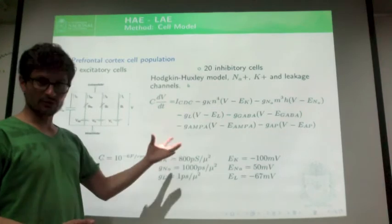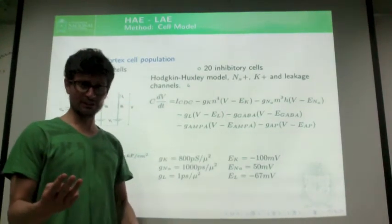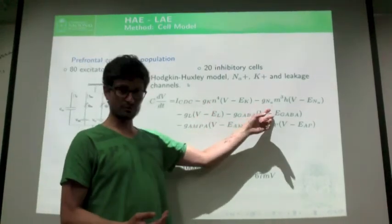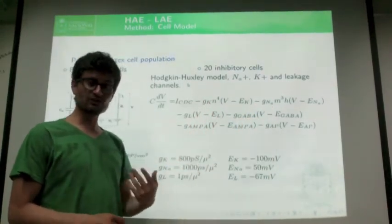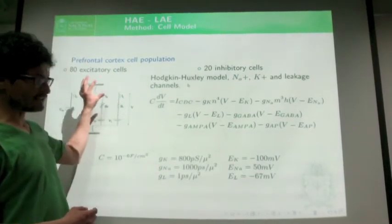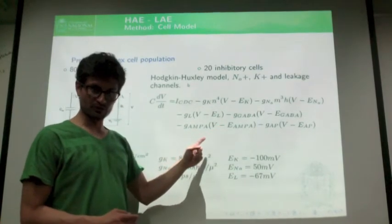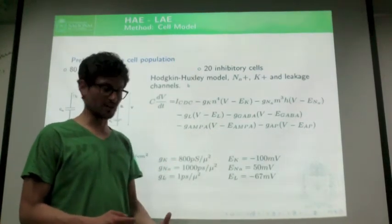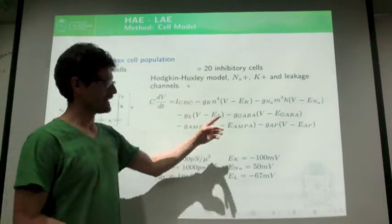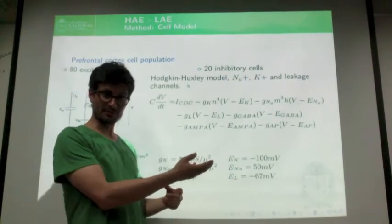In the Hodgkin-Huxley model, each neuron has three kinds of channels: potassium channels, sodium channels, and leak channels. In addition, if the neuron is excitatory, it also has AMPA connections, which are excitatory connections. But if the neuron is inhibitory, it has GABA connections, so it inhibits the neurons that it makes synapses with.